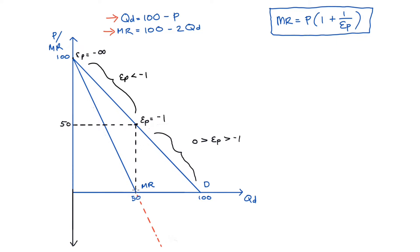Importantly, if we extend the marginal revenue curve further than usual, we see it becomes negative, illustrated with the red dotted line. It's also important to understand that our elasticity of demand changes along the demand curve. We go from perfectly elastic at the vertical axis intercept with an elasticity value of negative infinity, through elastic demand in the upper half where elasticity is less than negative 1, to unit elasticity at the midpoint with a value of negative 1. In the lower region we become increasingly inelastic, and at the horizontal intercept the elasticity value is 0, which is perfectly inelastic.